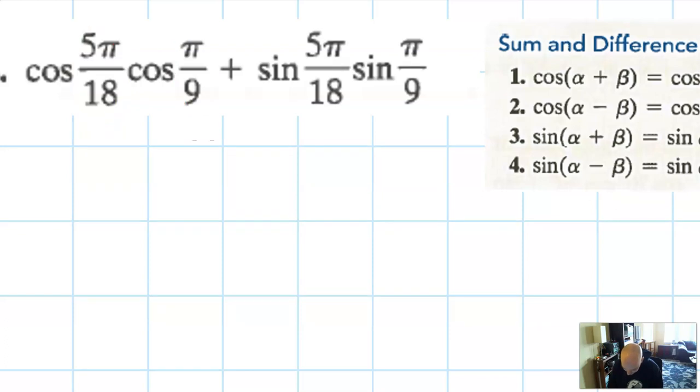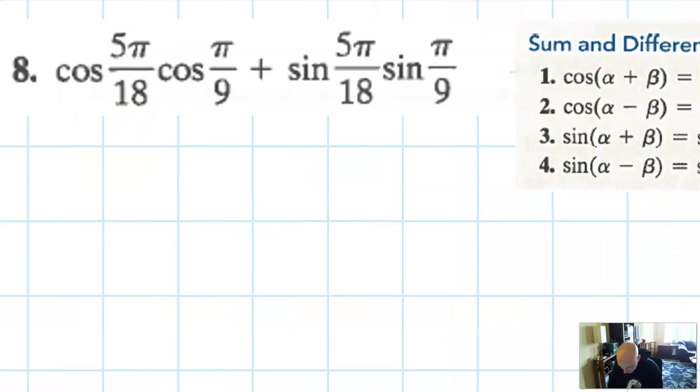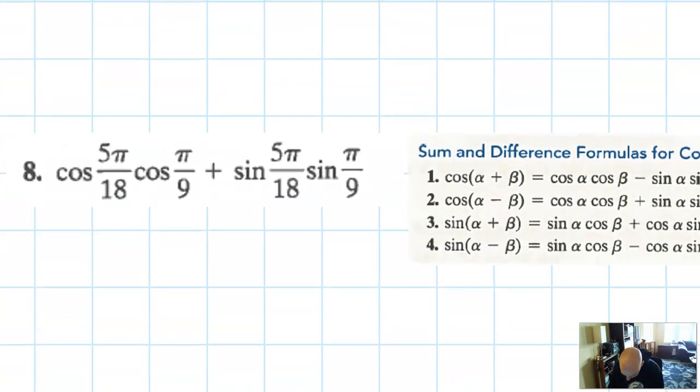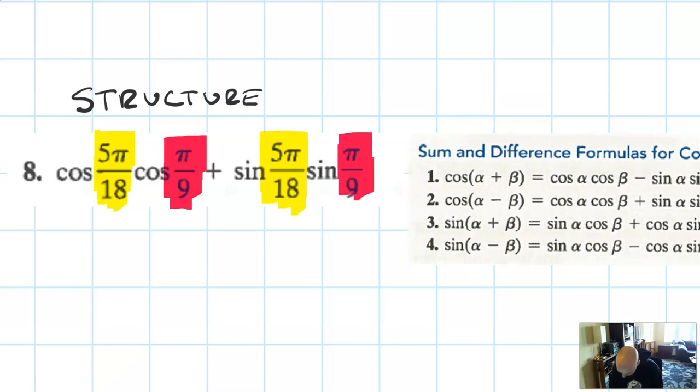And furthermore, there's just so many different terms here. I don't know how to do the cosine of that angle because I don't know what the angle is. It feels stuck. But this is a key point where I'm going to look for structure. I notice that there's some repetition in the angles. I have 5π over 18, 5π over 18, and a π over 9, π over 9. So I'm going to call 5π over 18 my angle alpha, and π over 9 my angle beta. Then what I see is that I really have something of the structure cosine alpha cosine beta plus sine alpha sine beta.